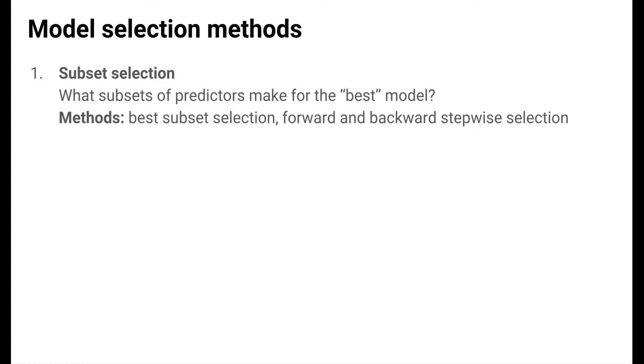What does best mean? Best refers to whatever quality metric we've chosen, often adjusted R-squared or cross-validated mean squared error. For subset selection methods, we'll look at best subset selection and forward and backward stepwise selection methods.